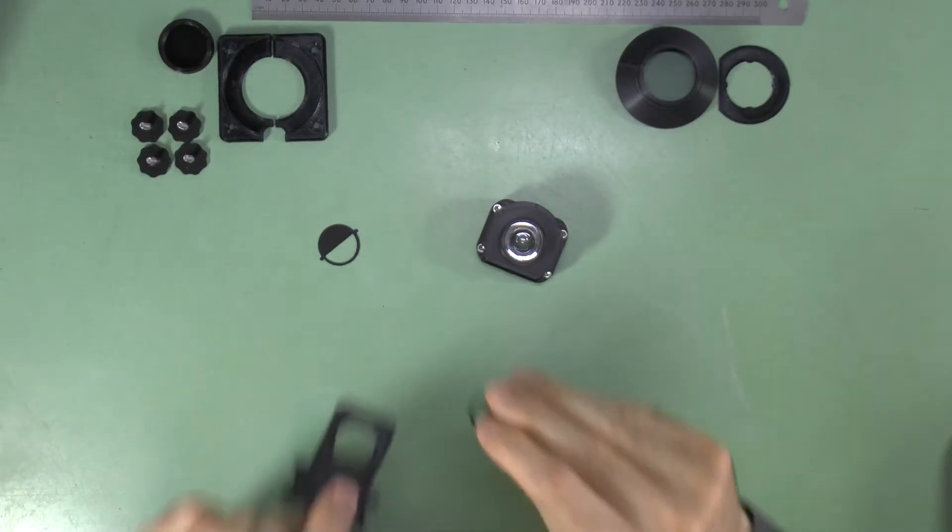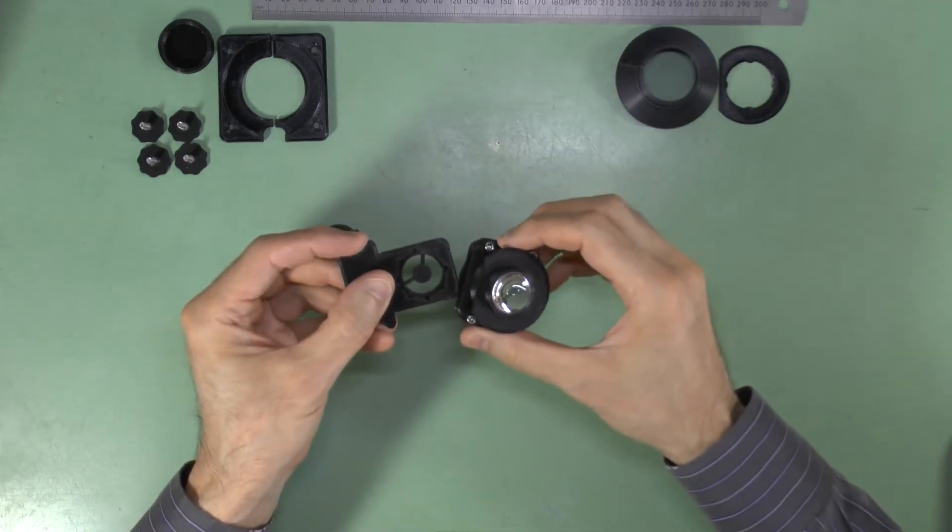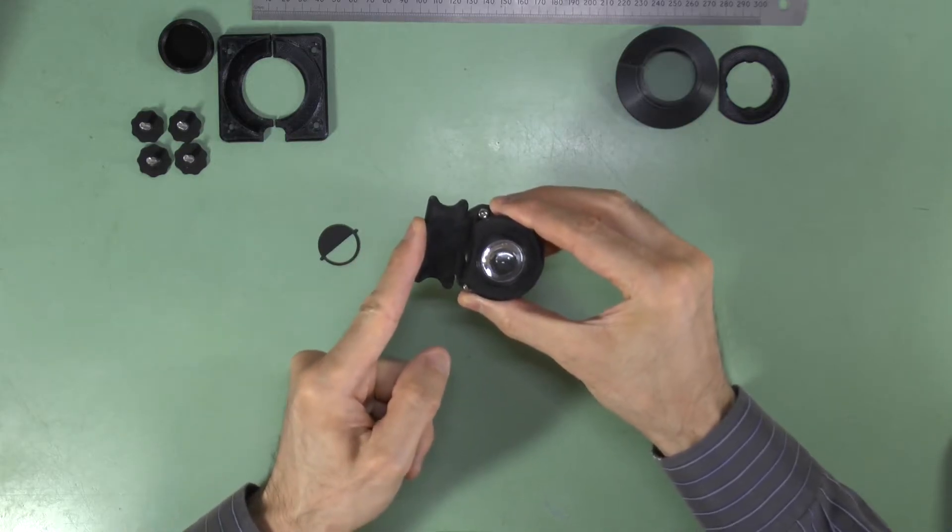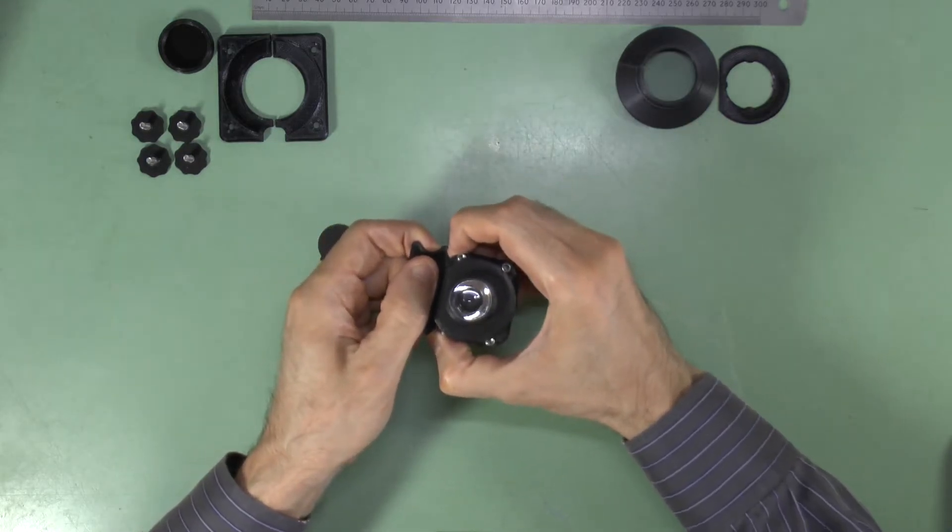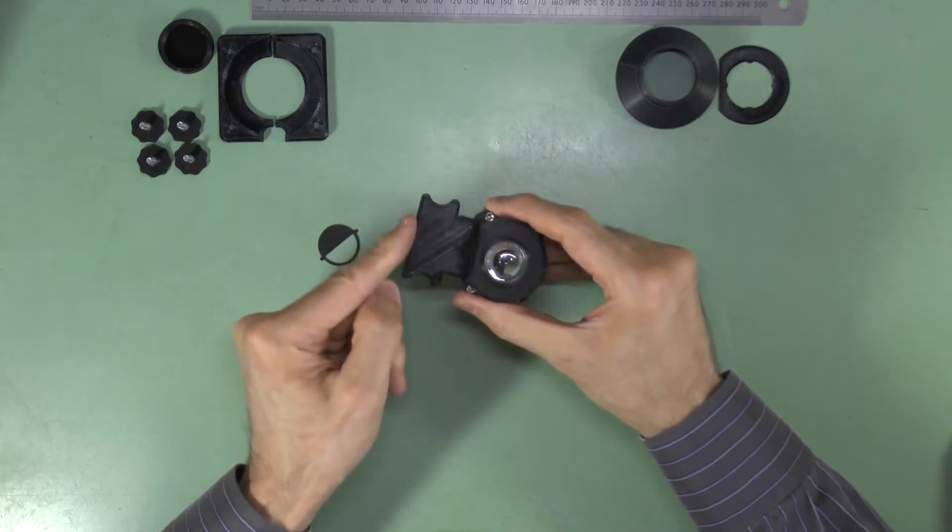Finally, print some condenser aperture filters and test the filter slot to ensure smooth action with the filter clicking in place as it should. Now that we have a fully assembled Abbe condenser, I'll show you how to fit it.